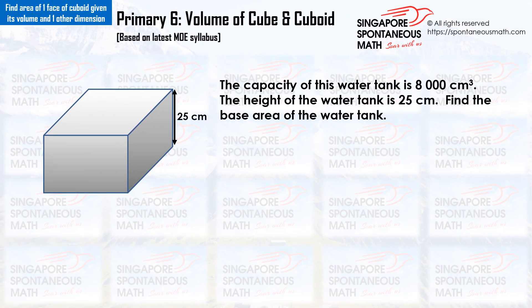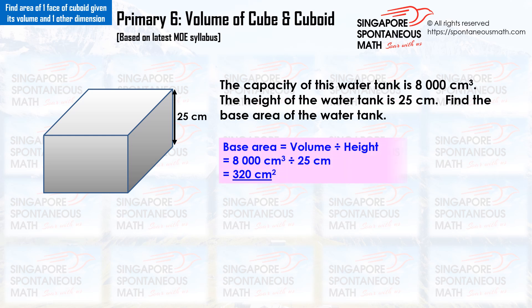The capacity of this water tank is 8,000 cm³. The height of the water tank is 25 cm. Find the base area of the water tank. Base area equals volume divided by height: 8,000 divided by 25 equals 320. The base area of the water tank is 320 cm².